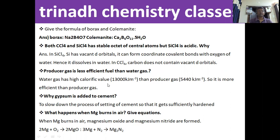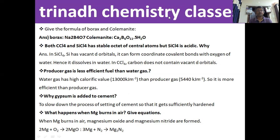The next question: why is gypsum added to cement? It is to slow down the process of setting of cement so that it gets sufficiently hard. Next: what happens when magnesium burns in air? When magnesium burns in air, it forms magnesium oxide and magnesium nitride — it reacts with oxygen to form magnesium oxide and with nitrogen to form magnesium nitride.